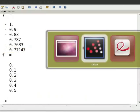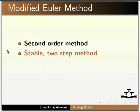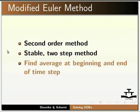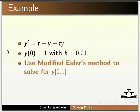Now let us look at the modified Euler method. It is a second order method and is a stable 2-step method. We find the average of the function at the beginning and end of the time step. Let us solve this example using the modified Euler method. We are given a function Y dash equal to T plus Y plus TY. The initial value of Y is 1 and the step length is 0.01. We have to find the value of Y at time T equal to 0.1.